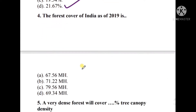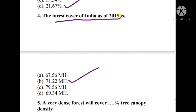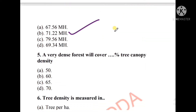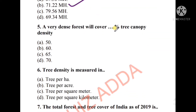Question number four: The forest cover of India as of 2019 — the options are 67.56 Mha, 71.22 Mha, 79.56 Mha, or 69.34 Mha. The right answer is option B, that is 71.22 Mha. It is about the forest cover of India as of 2019.